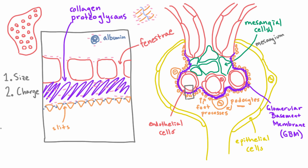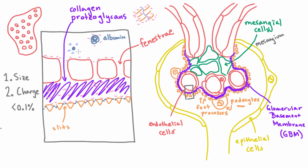The result is that all three layers repel negatively charged proteins like albumin, because negative charges repel each other. You might ask what about a small protein with positive charges — and actually, a protein like that would have a much easier time getting through. Some proteins do get through, but the system is still effective enough that less than 0.1% of proteins in the blood actually make it into the filtered fluid.